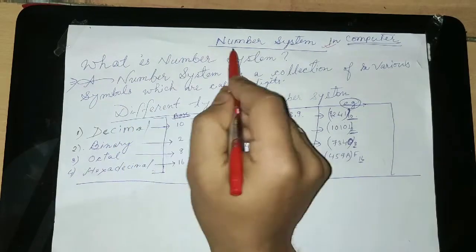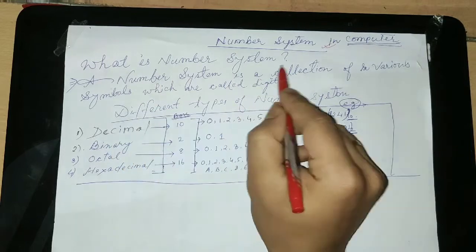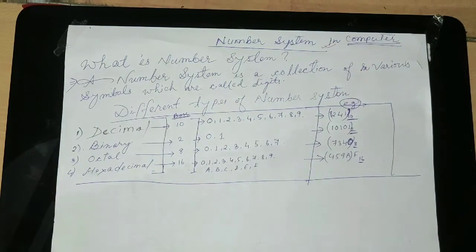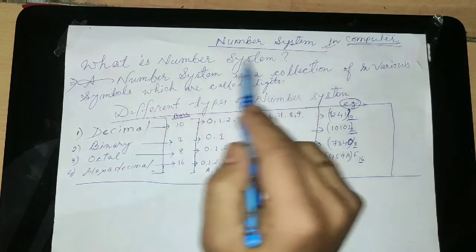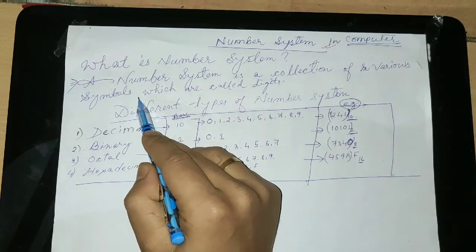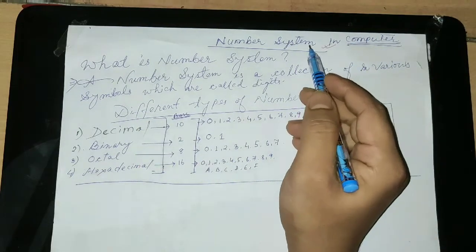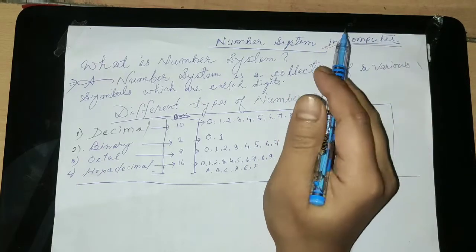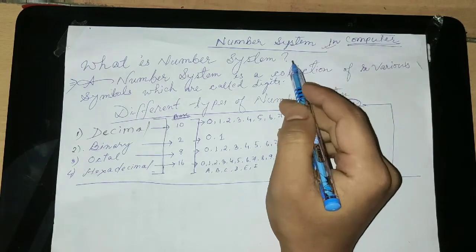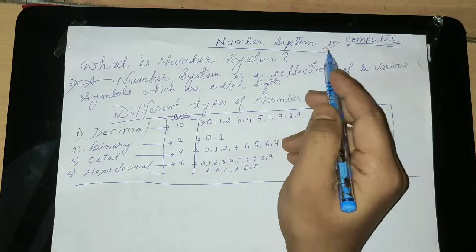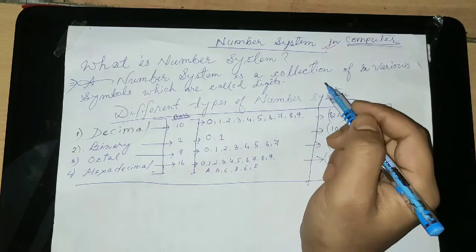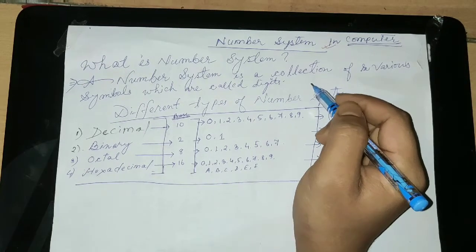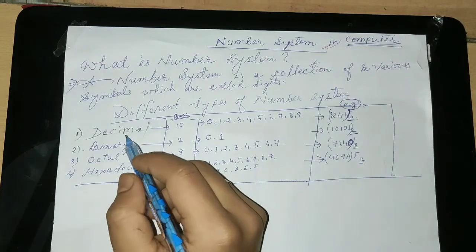So, at first, what is number system? A number system is a collection of various symbols which are called digits. When there are various symbols like 1, 2, 3, 4, or 0, 1, 2, 3, 4 till 9 — these are all called number systems. In a computer, there are various different types of number system. Let's learn what all are the different types of number systems in computer.